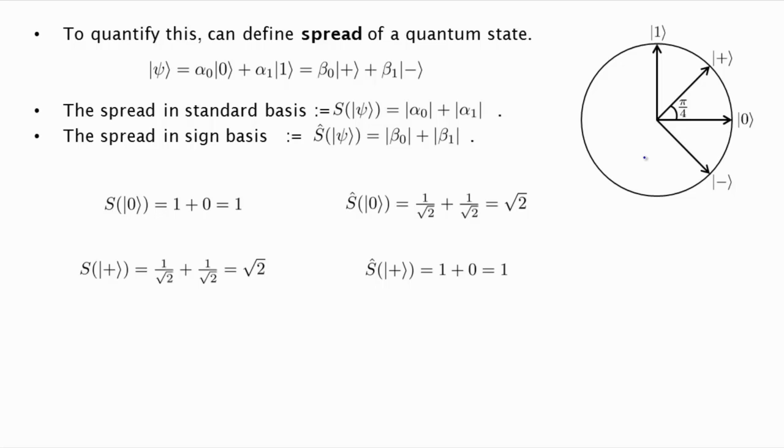And in this case, 0 and 1 have maximal spread of square root 2. And so what this uncertainty principle for bit and sign says is that if you look at the spread in the standard basis and multiply it by the spread in the sign basis of any qubit, then this product is at least square root 2. Which means that both of these values cannot simultaneously be 1.